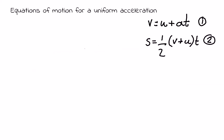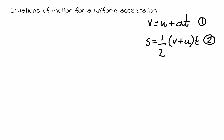Now that we've got our first two equations — v equals u plus at, and s equals a half times (v plus u) times t — we can use these two to create another two. Notice that the first equation doesn't contain displacement s, and the second doesn't contain acceleration a. So we're going to create one that doesn't have v in it.